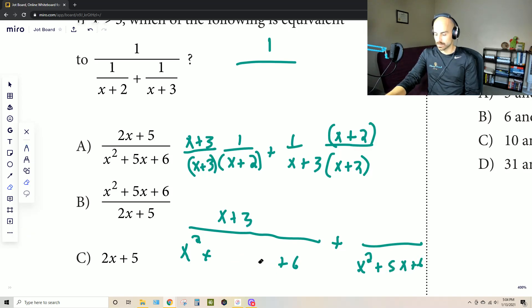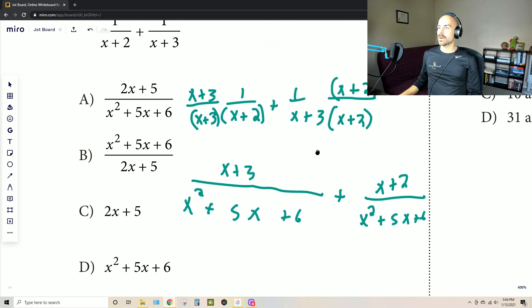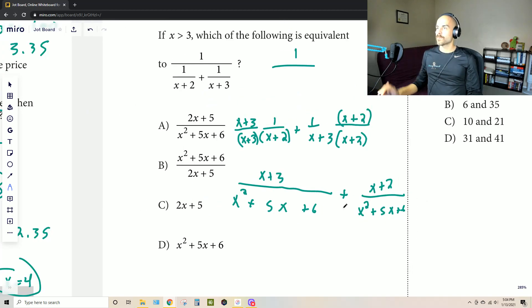I might as well just change that now here. Plus 5x. And then the numerator would become x plus 2. And then our new numerator would be 2x plus 5, which is great. That's what we see in some of these answers.